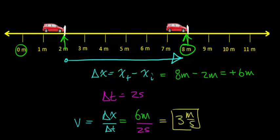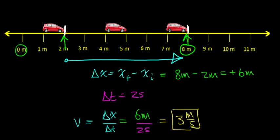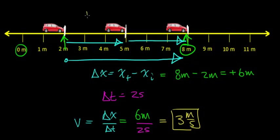So this object's velocity is +3 meters per second. If it's traveling with constant velocity, that means it moves 3 meters in the positive direction every second — for example, going from 2 meters to 5 meters in the first second, then an additional 3 meters forward each second after that. A positive velocity means the object is moving in the positive x direction.